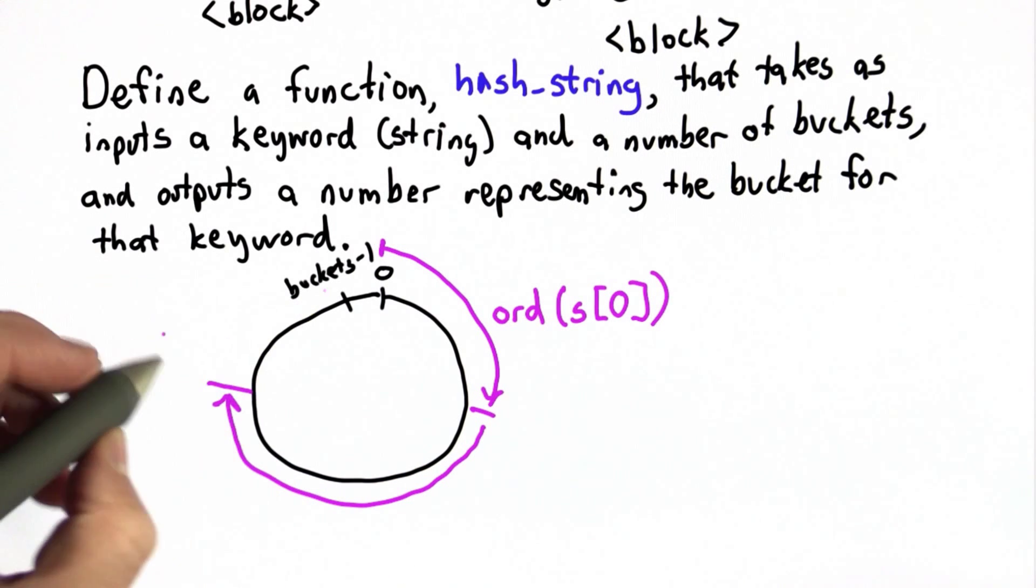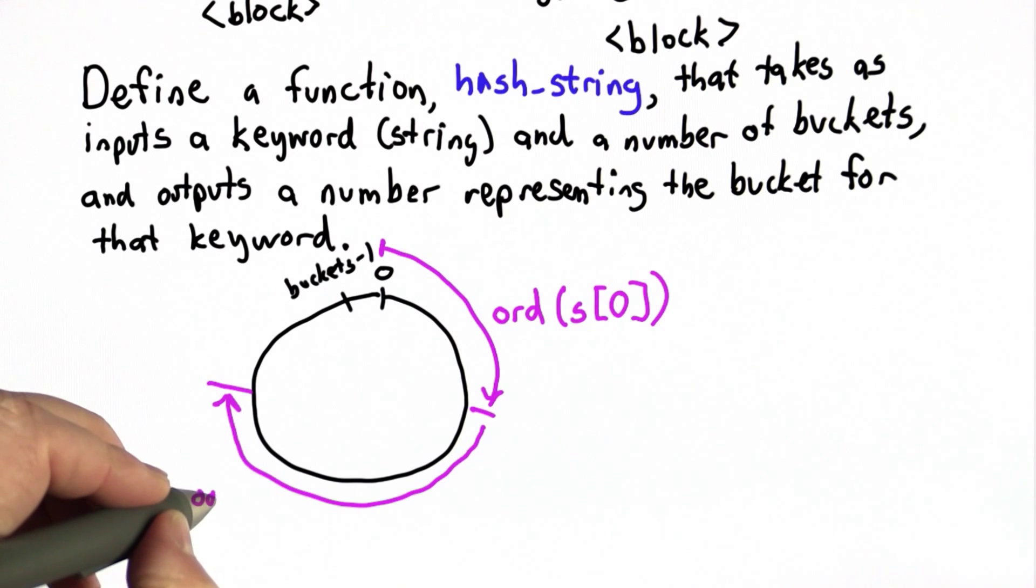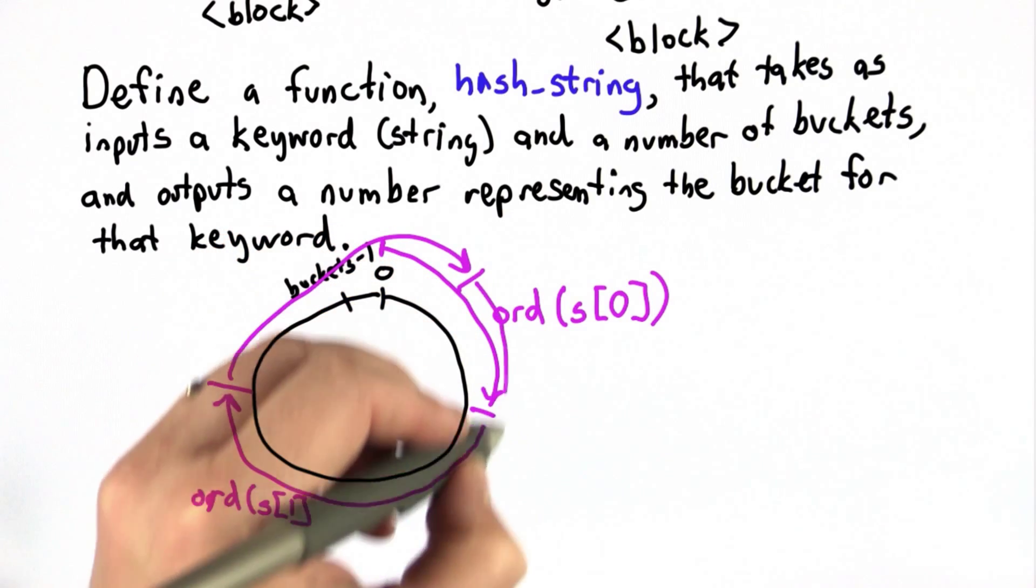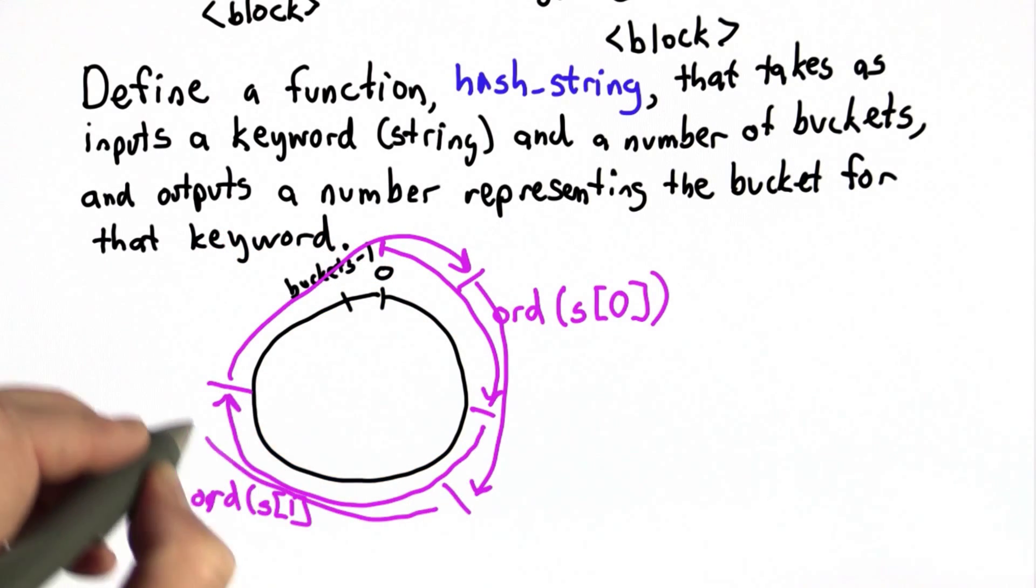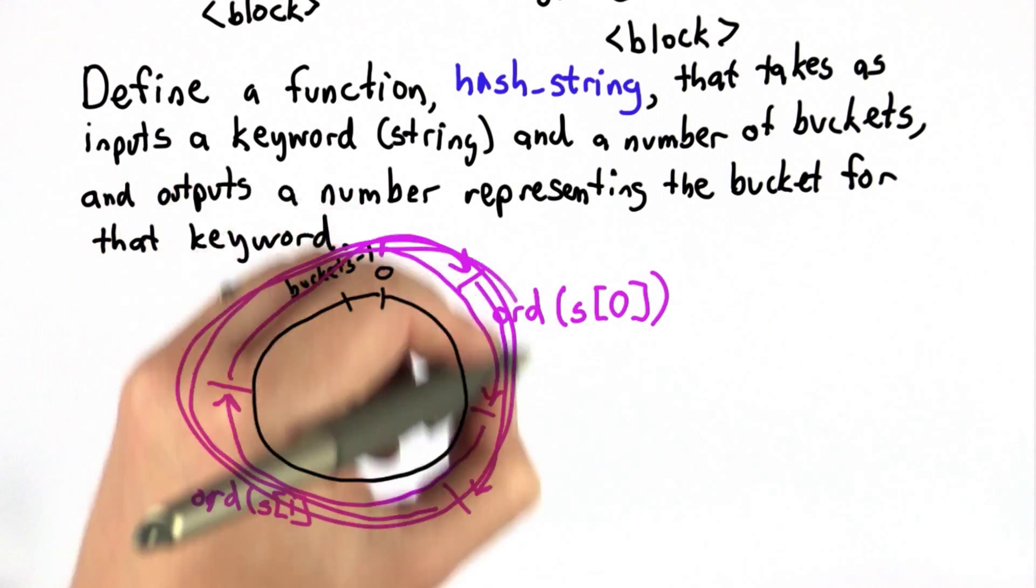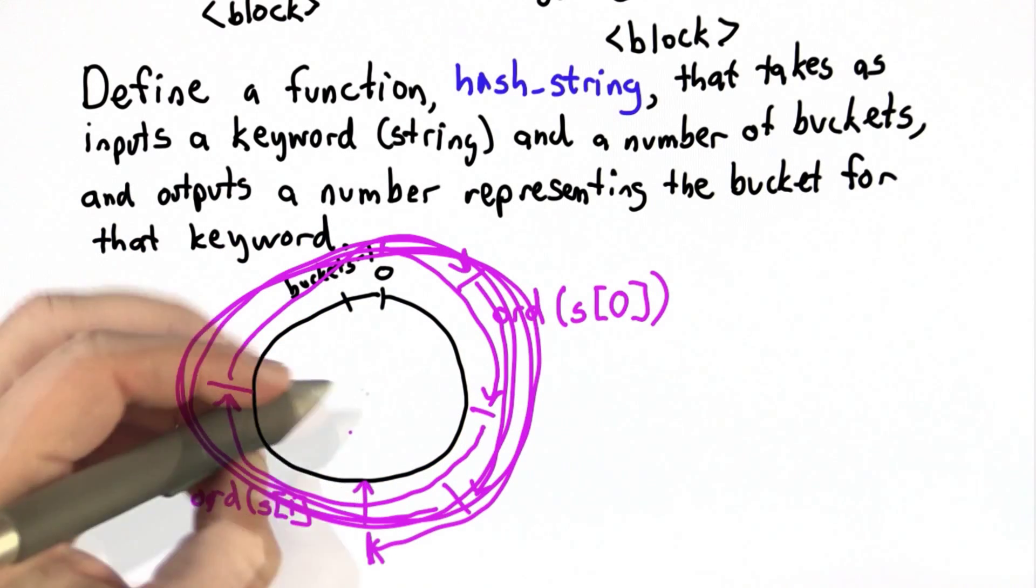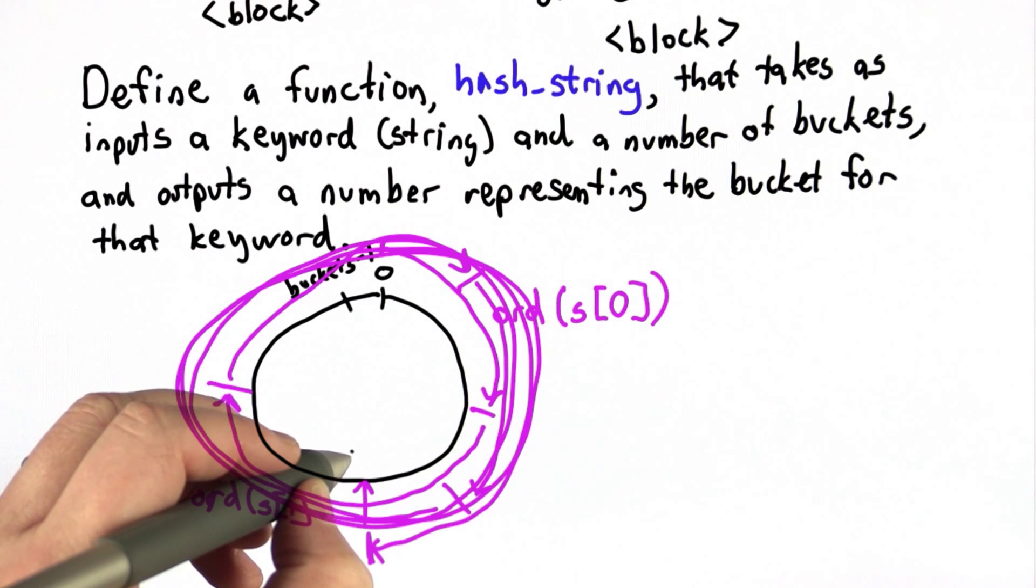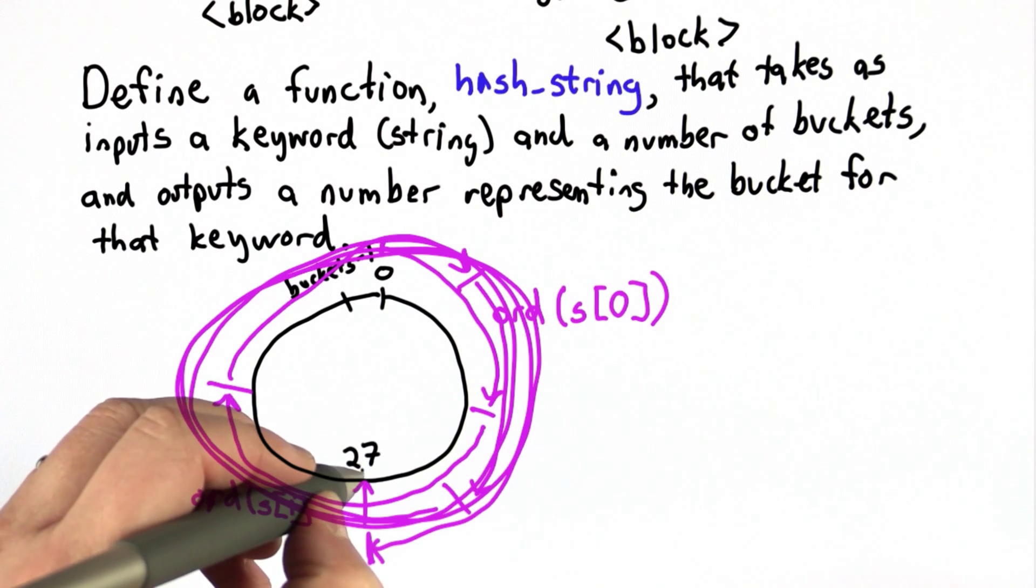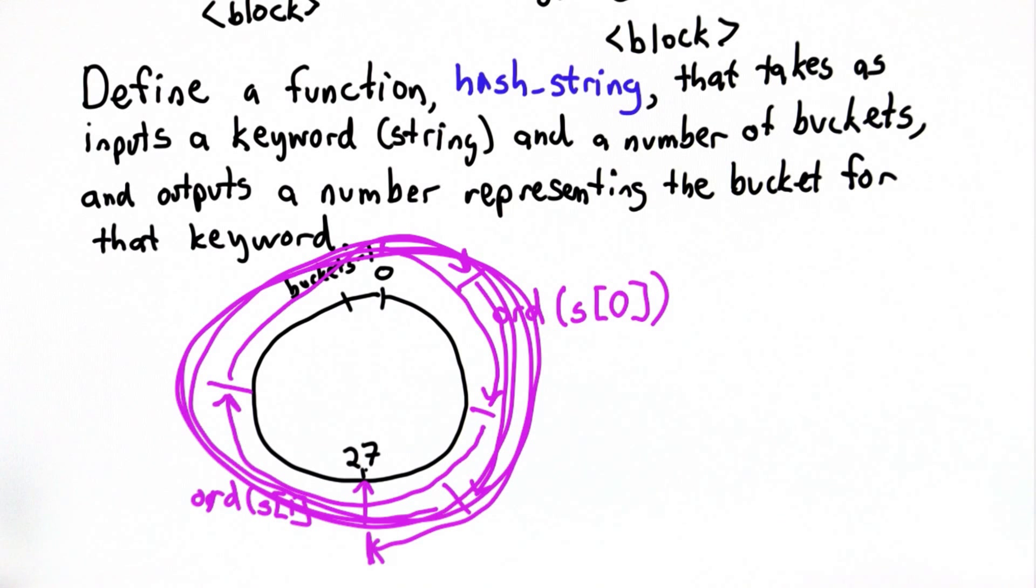The circle can be any size depending on the number of buckets, and we're going to keep going around the circle using modular arithmetic for each letter. As we keep going, we can go lots and lots of times if it's a big word. Wherever we end up is going to be the bucket that we use, and let's say that's position 27. So that's the idea.